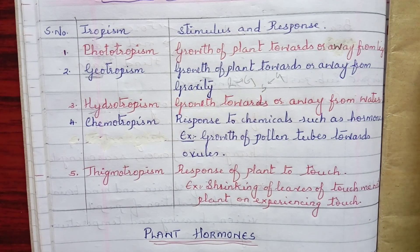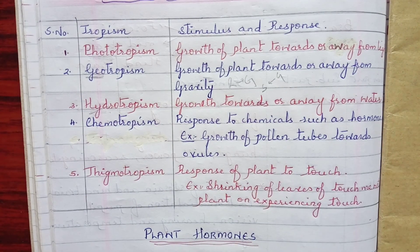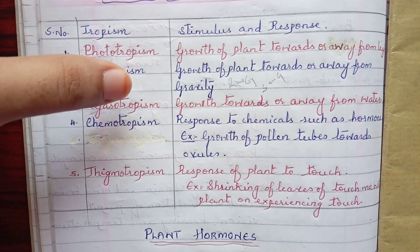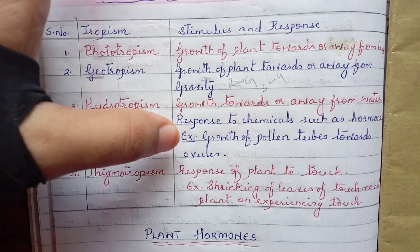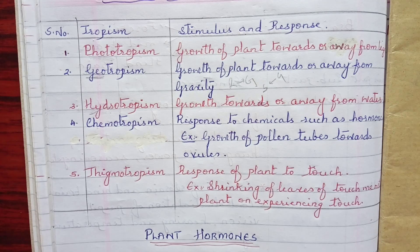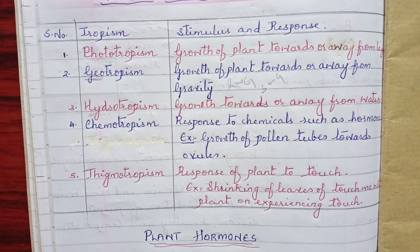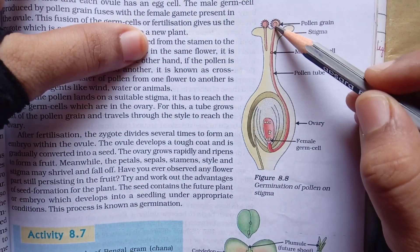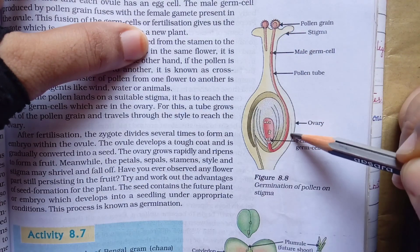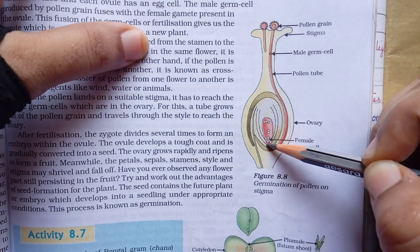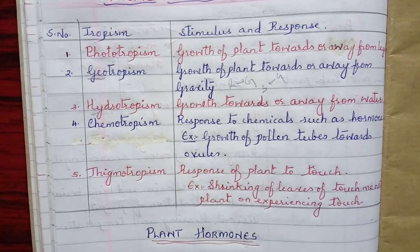Next is chemotropism — response to chemicals. Plants have chemicals such as hormones, which is what we are specifically referring to here. The example is pollen tubes growing towards ovules. As you can see, the pollen tube grows directly towards the ovule — this growth is a response to the hormones released by the ovules.